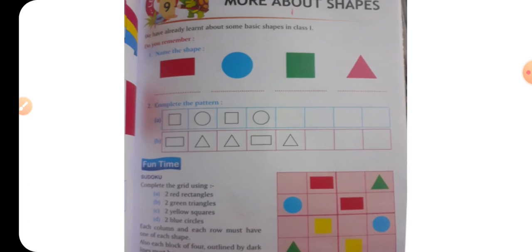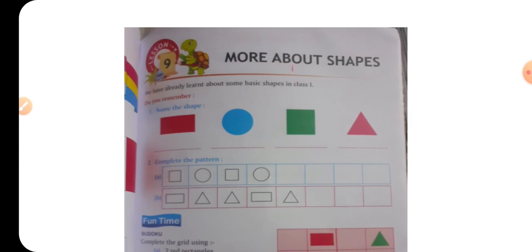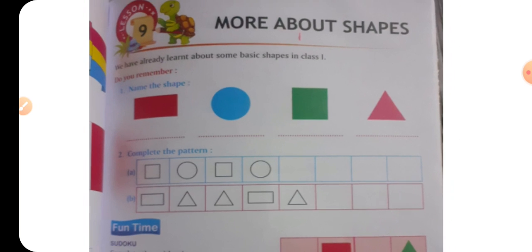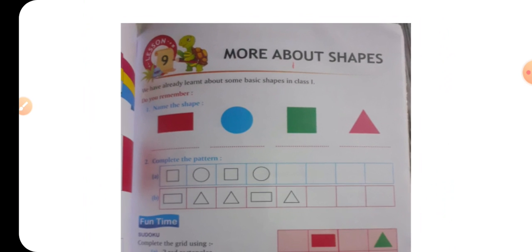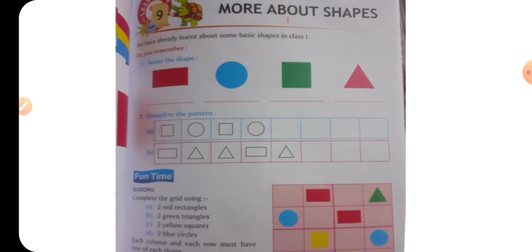More about shapes — aaj hum shapes ke baare mein padhne jaa rahe hain. We have already learned about some basic shapes in class first, so already aapne grade one mein shapes ke baare mein basic shapes ke baare mein padha hoga. Do you remember? So abhi yaha pe kuch shapes banai gai hain, hume inki naam likhni hai.